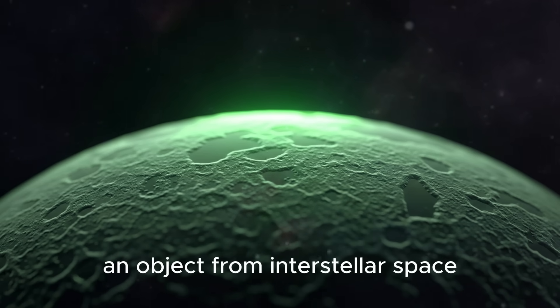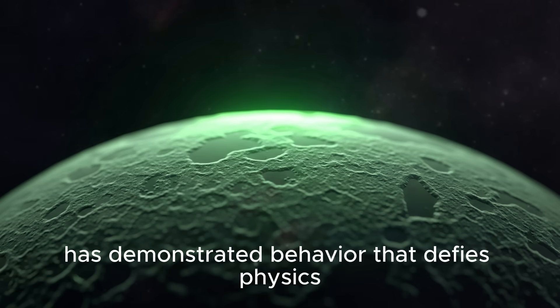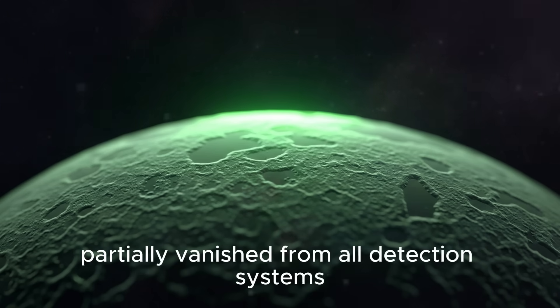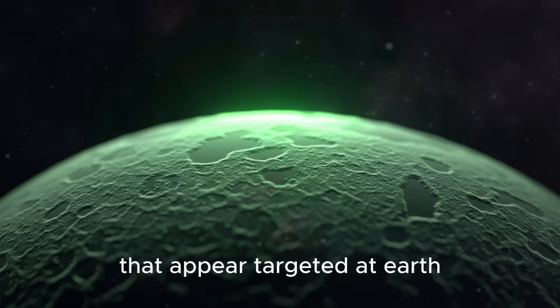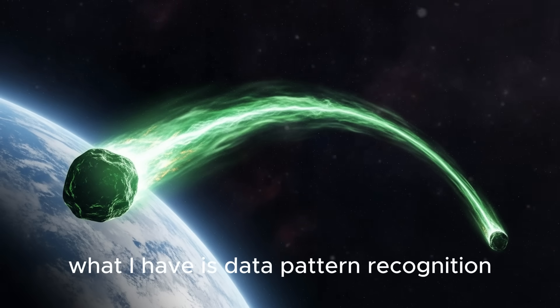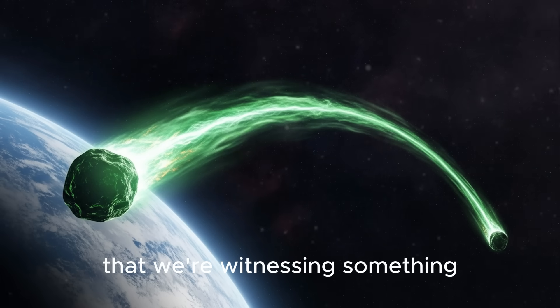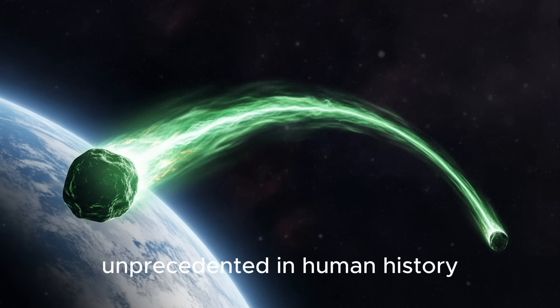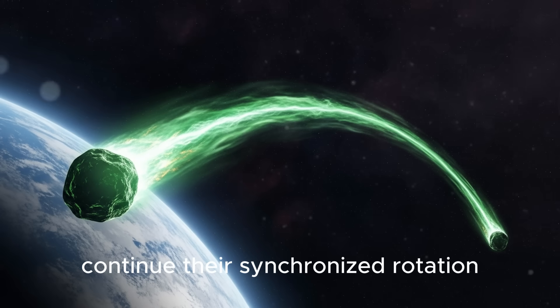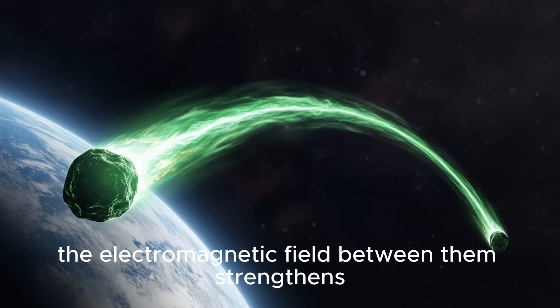This is not speculation. This is documented observation from multiple independent sources worldwide. Something is happening that we don't understand. An object from interstellar space has demonstrated behavior that defies physics, split with surgical precision, partially vanished from all detection systems, and is now coordinating movements that appear targeted at Earth. I don't have answers. No one does. What I have is data, pattern recognition, and a growing certainty that we're witnessing something unprecedented in human history.